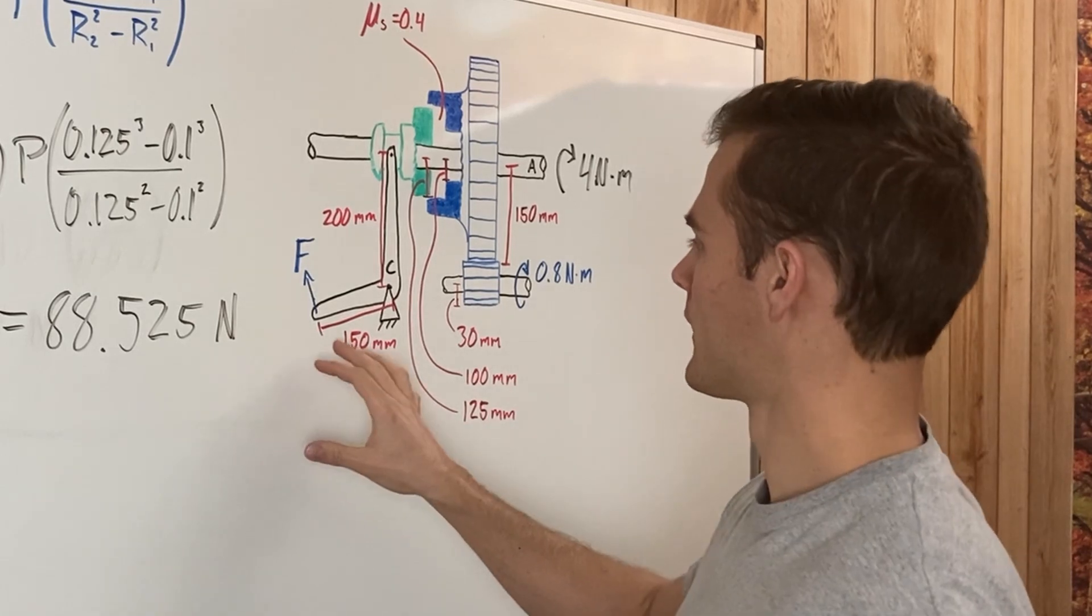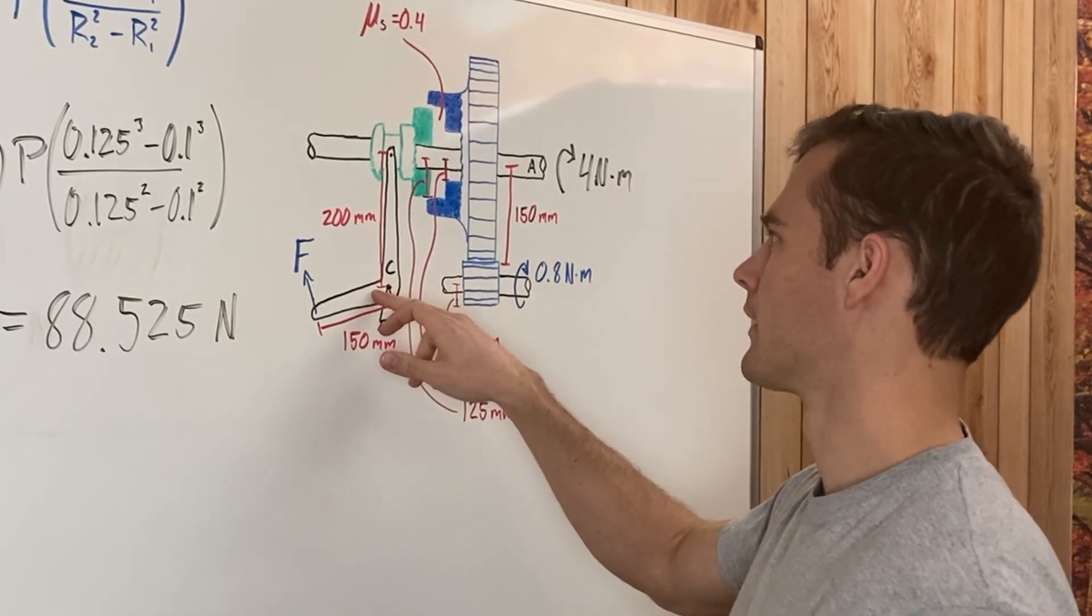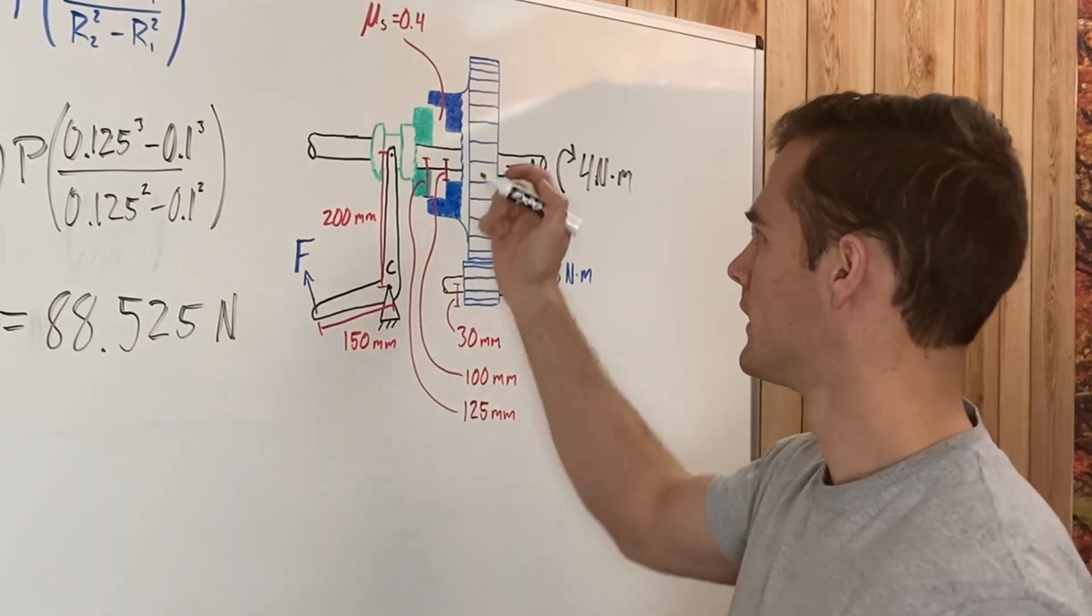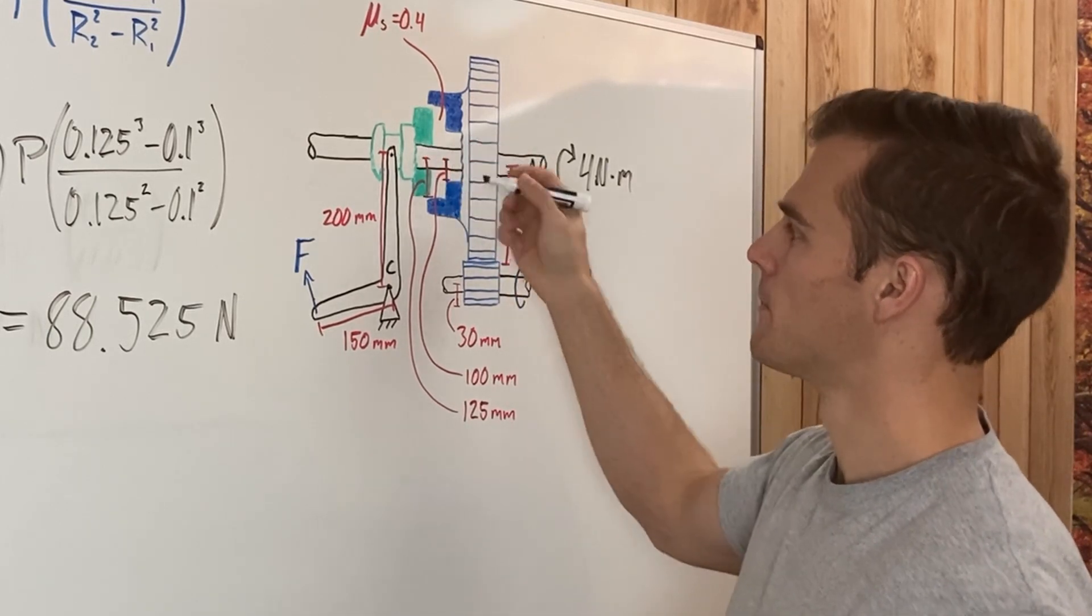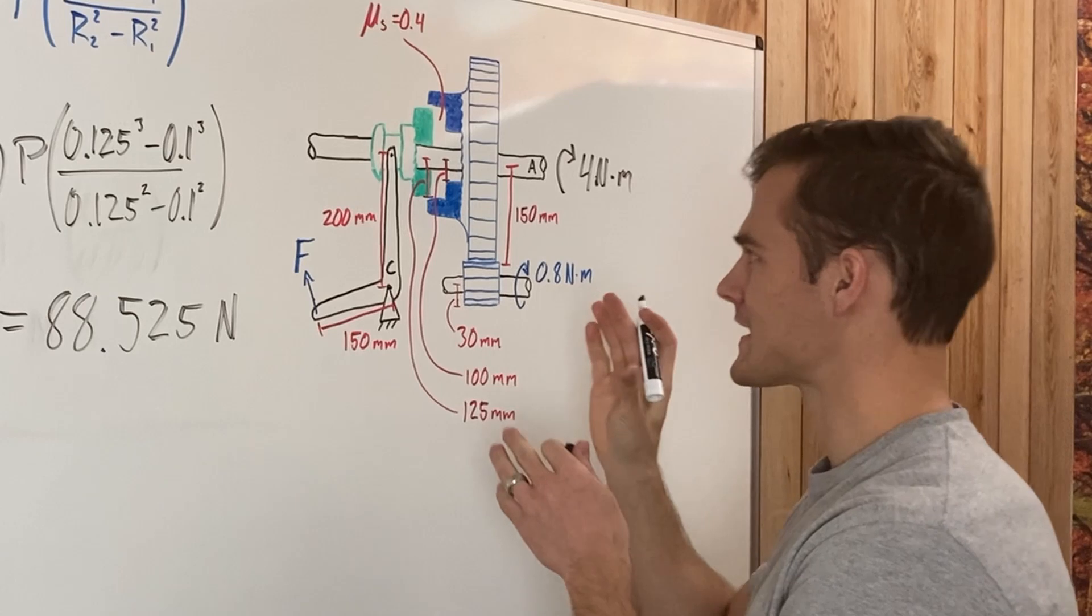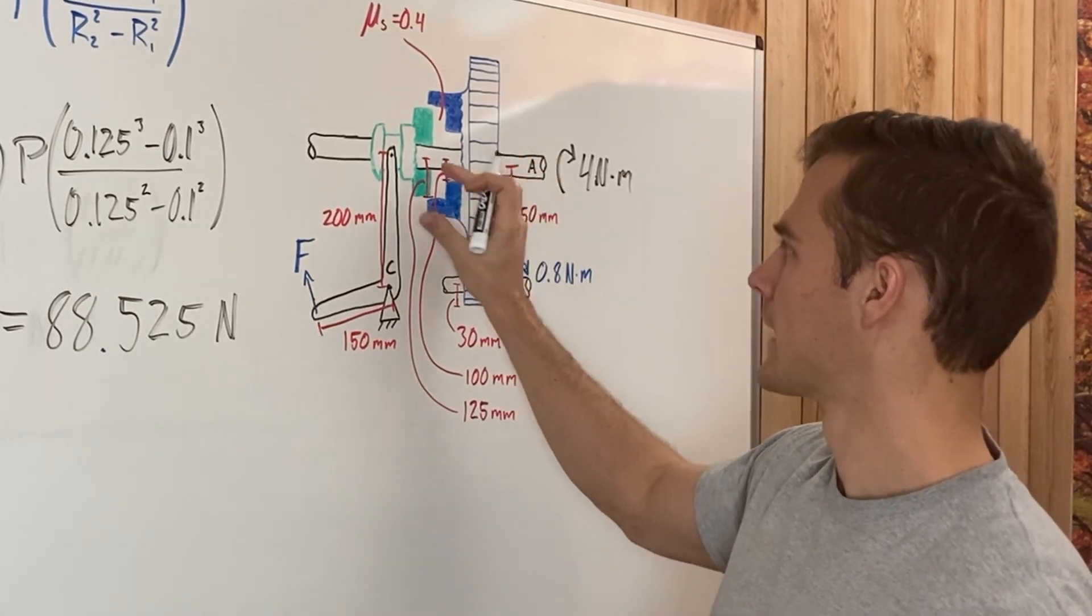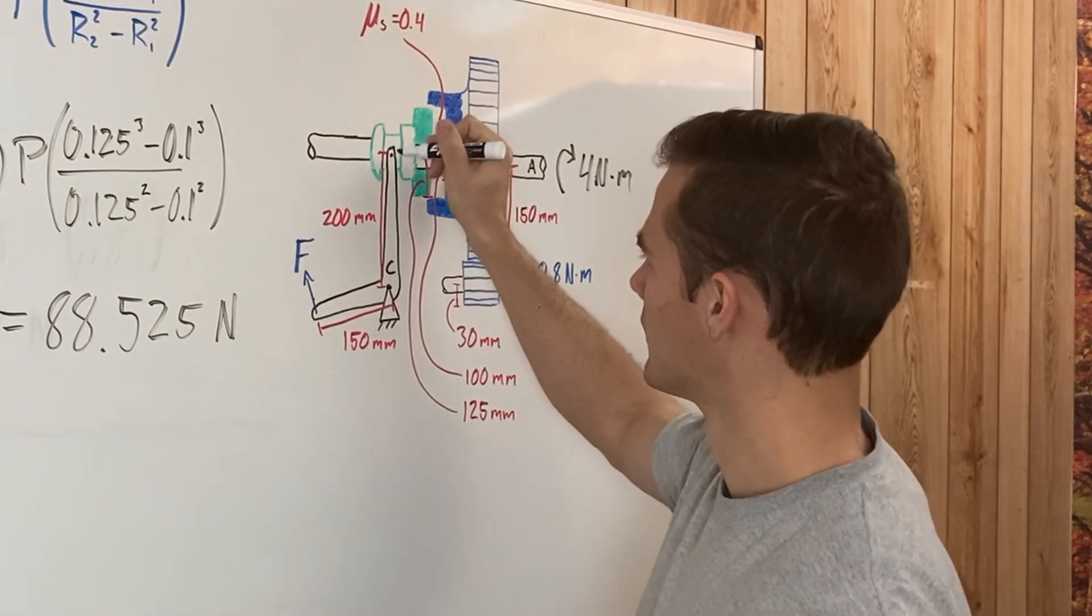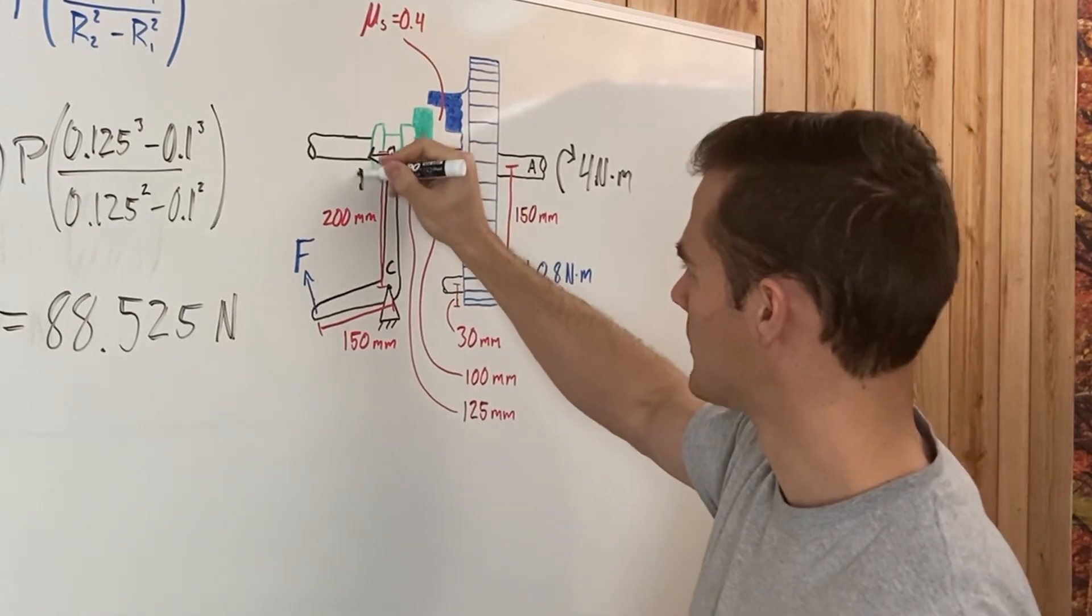We can find F through some moments about point C here. We know that our force P is pushing on the mechanism this way, but because it's all static, we're saying it's not moving. At this point, this mechanism is going to be pushing back on this lever this way. So this is going to be our force P.